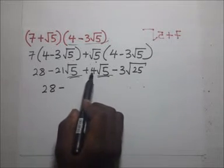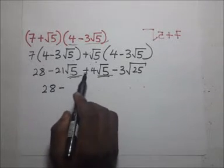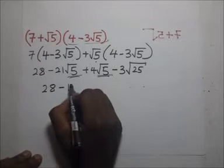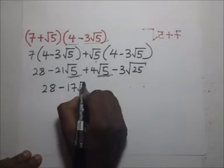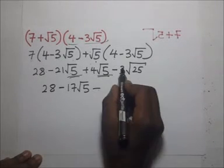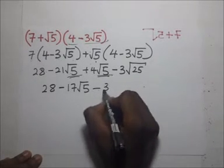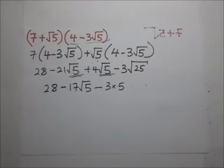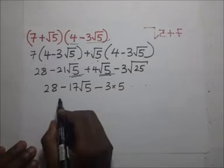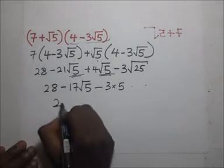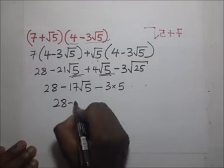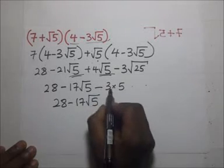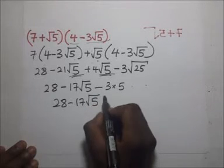Treating √5 as x, negative 21x plus 4x gives us minus 17√5. Then minus 3 times √25, and √25 is 5, so that's minus 15. So this is going to become 28 minus 17√5 minus 15.